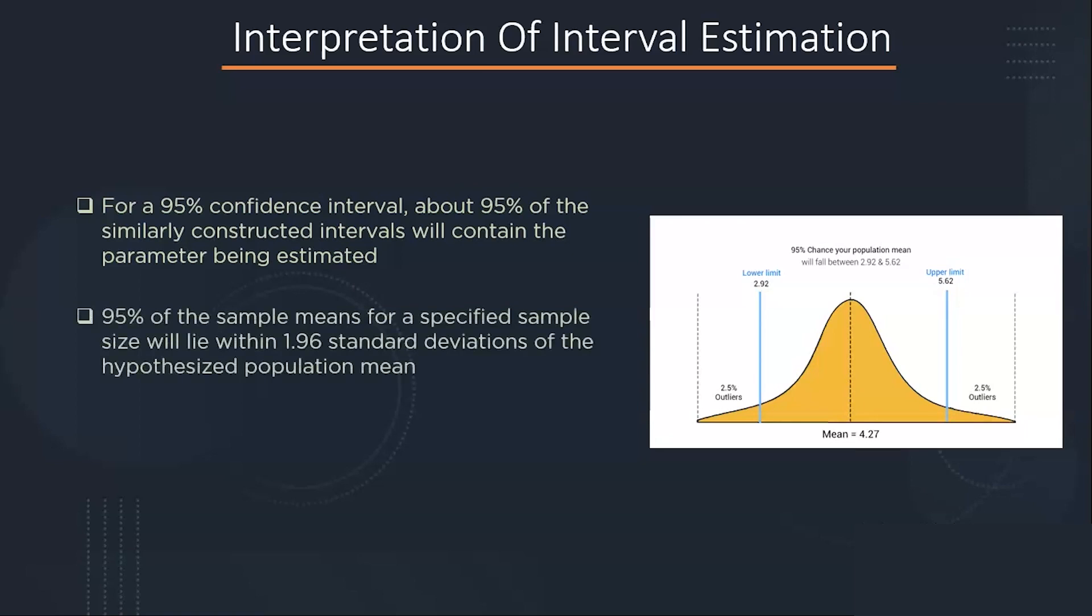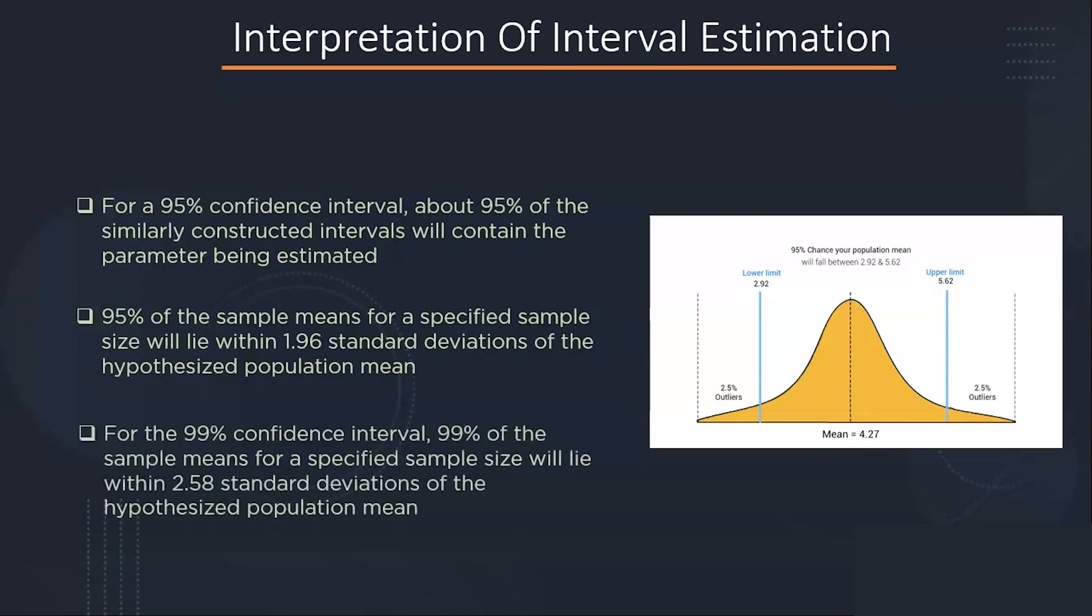95 percent of the sample means for a specified sample size will lie within 1.96 standard deviations of the hypothesized population mean. Similarly for 99 percent confidence interval, 99 percent of the sample means will lie within the 2.5 standard deviations from the population mean. Now let's see how you can calculate the interval estimates.